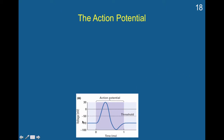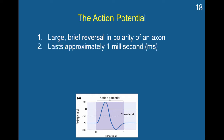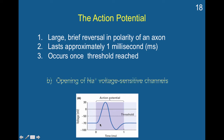Here's an example of the action potential path. Here's your resting threshold at negative 70. The cell becomes more positive — this is the action potential. It propagates down the cell, then starts to recover back to baseline, becoming more negative again. In that recovery process, it goes a little bit further, hyperpolarizes, and then returns to threshold. An action potential is a large, brief reversal in the polarity of an axon. It lasts approximately one millisecond, and it occurs once this threshold is reached — it only occurs once this threshold is reached.